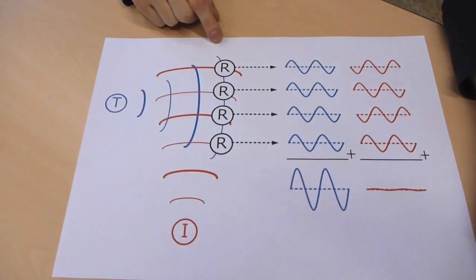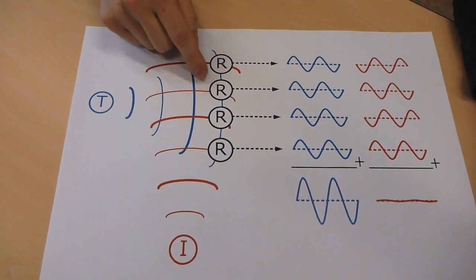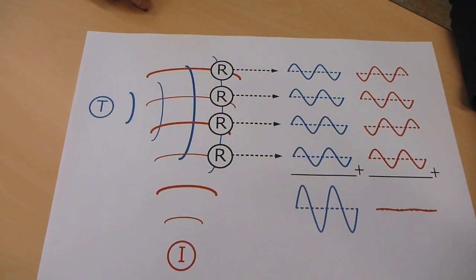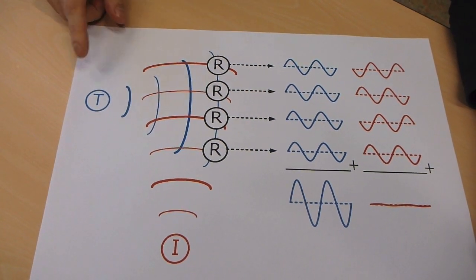However, we can solve this problem with beamforming techniques. What we do is instead of one receiver we take four receivers which receive the desired signal with the same delay while our interferer signal here is being received with different delays.